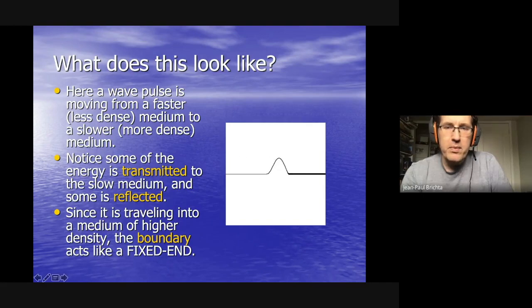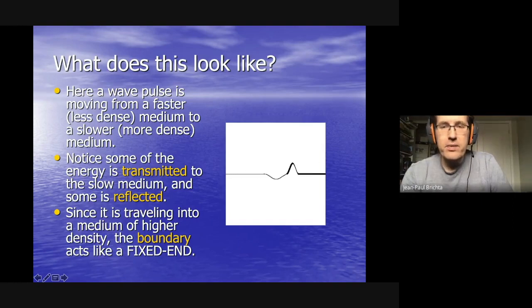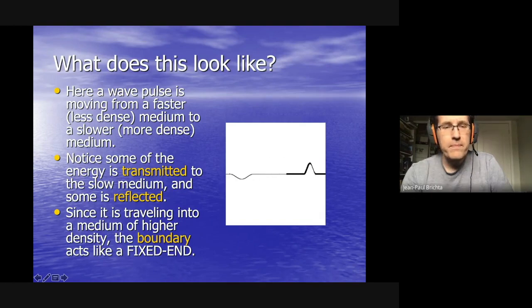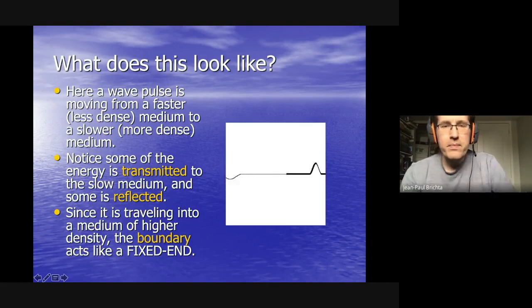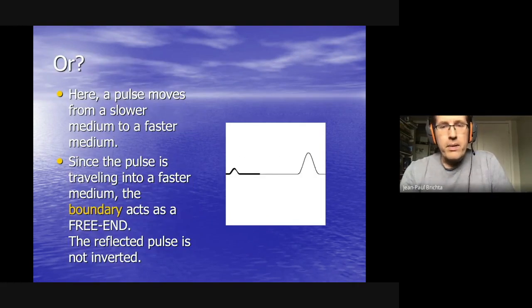It's not the whole story — some of the wave also gets reflected back, and that reflection is actually an inversion. So the wave almost splits into two: part goes through the slow medium traveling slower, and part reflects back as an inverted wave. The boundary here acts like a fixed end.